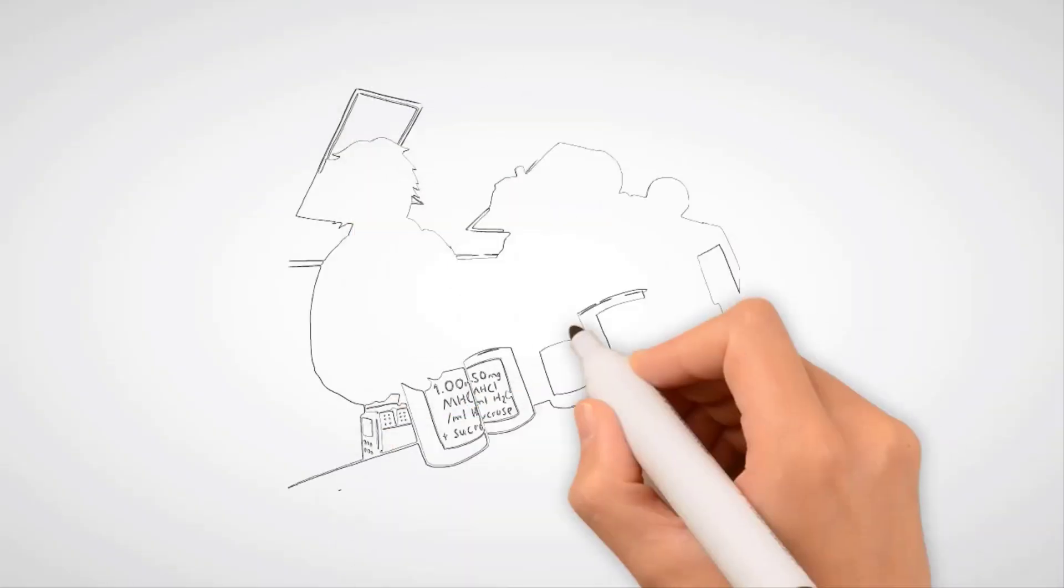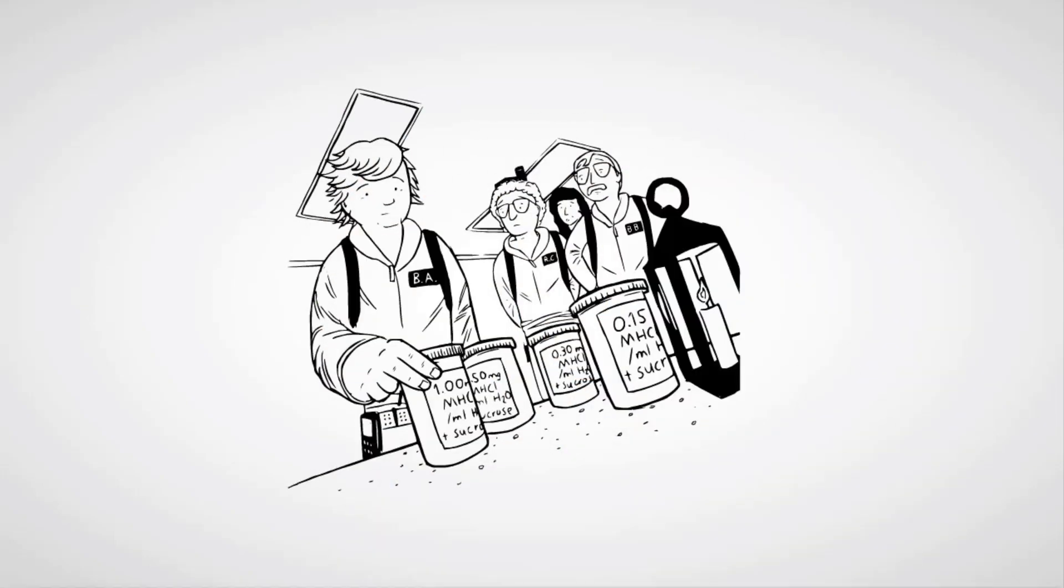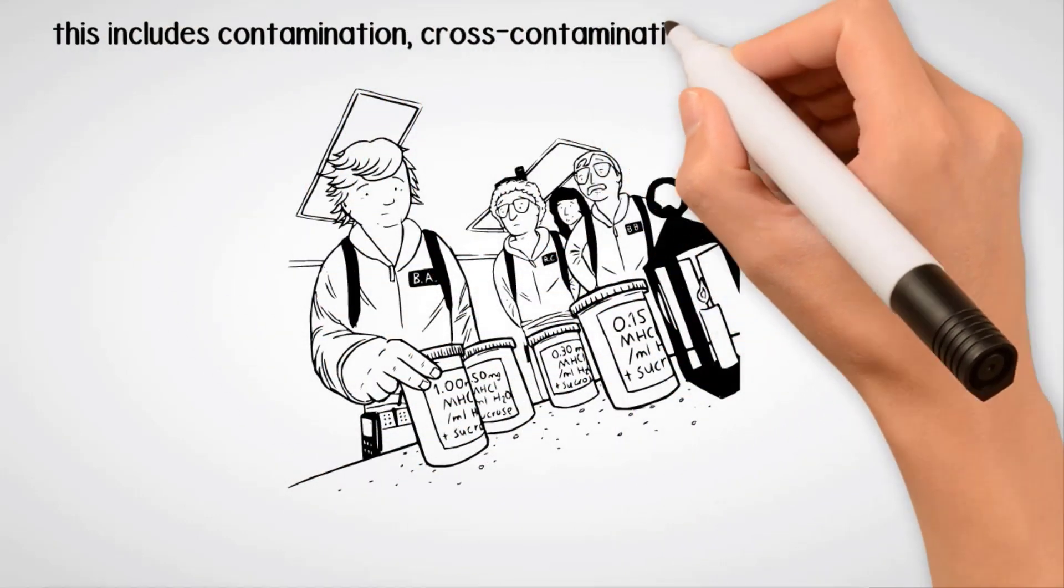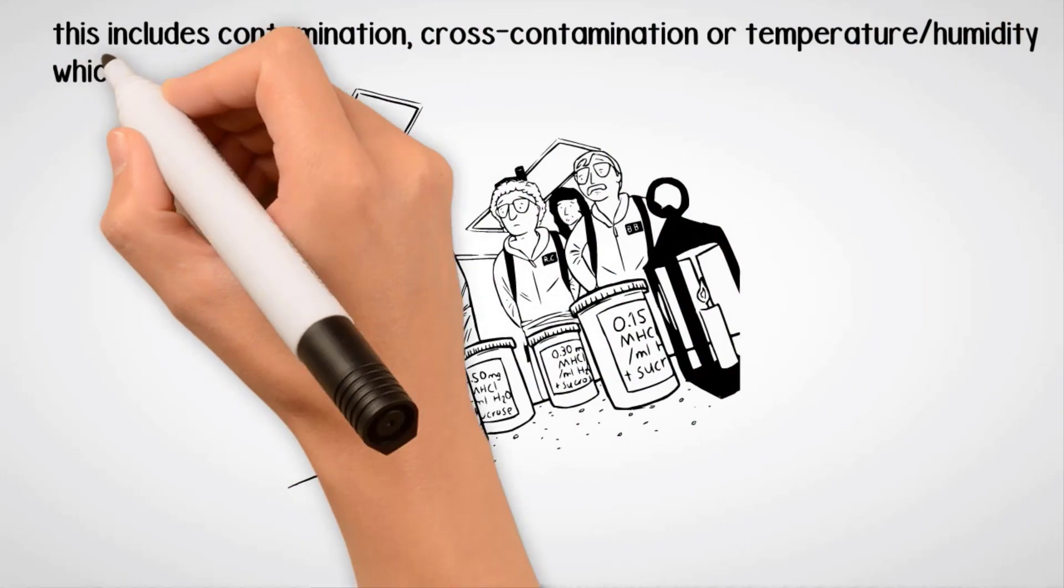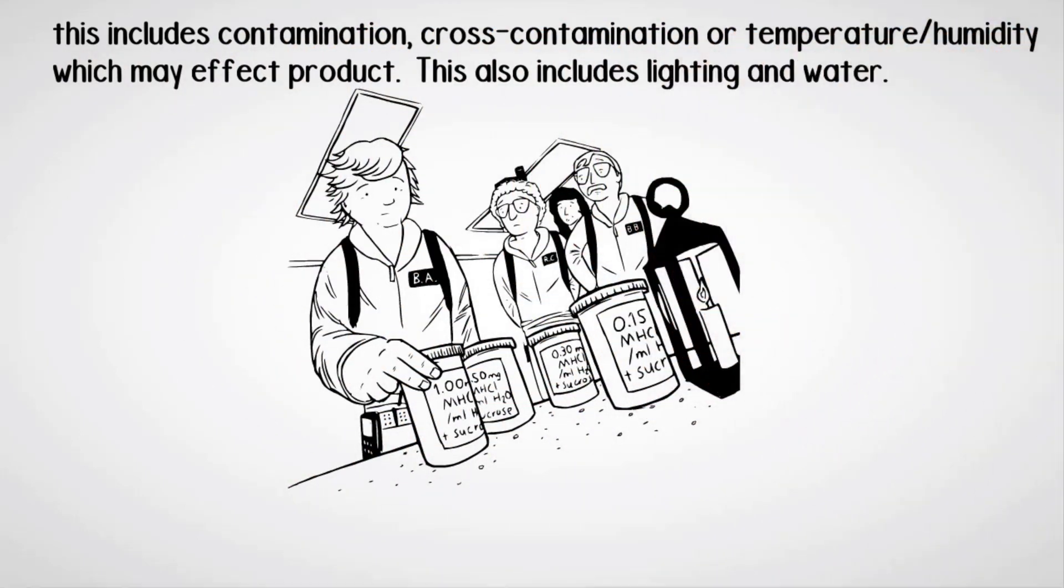Principle 4. The facility must be maintained to ensure the environment does not contribute to adulteration of the drug product. This includes contamination, cross-contamination, temperature and humidity which may affect product, and also lighting and water.